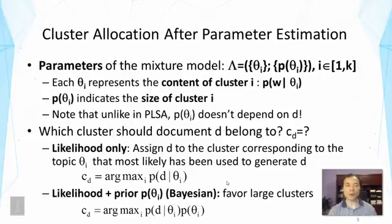So now let's look at the key problem of assigning documents to clusters or assigning clusters to documents. So that's c sub d here. And this will take one of the values in the range of 1 to k to indicate which cluster should be assigned to d. Now, first, you might think about a way to use likelihood only, and that is to assign d to the cluster corresponding to the topic theta i that most likely has been used to generate d. So that means we're going to choose one of those distributions that gives d the highest probability. In other words, we'll see which distribution has content that matches our d the best. Intuitively, that makes sense.